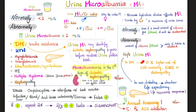Does urine microalbumin carry prognostic value? Yes. If you have high urine microalbumin and you are diabetic, this increases your risk of cardiovascular disease mortality, end-stage kidney disease, and retinopathy five to ten times compared to the general population. Even if you are not diabetic, microalbuminuria is correlated with a shorter life expectancy — to the point that some life insurance companies will order this test to assess your risk of dying using their actuarial tables.